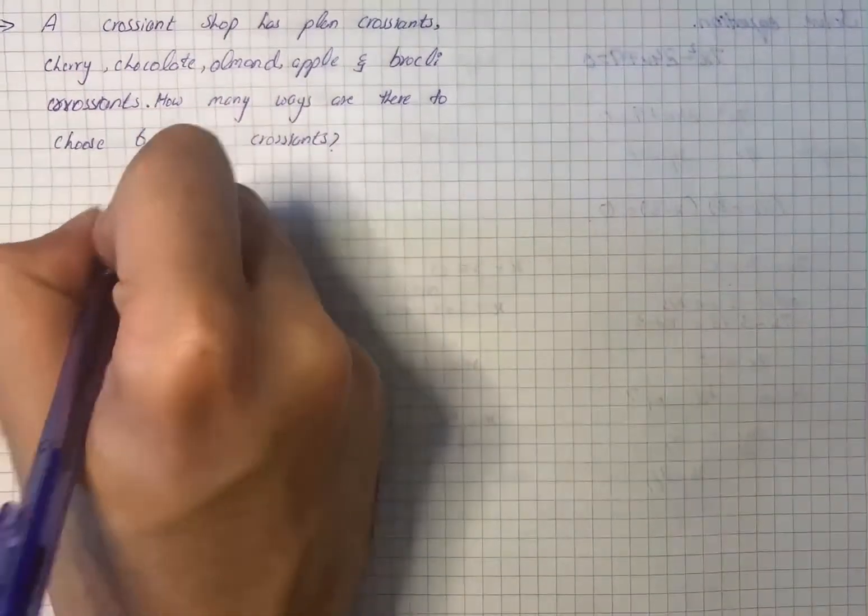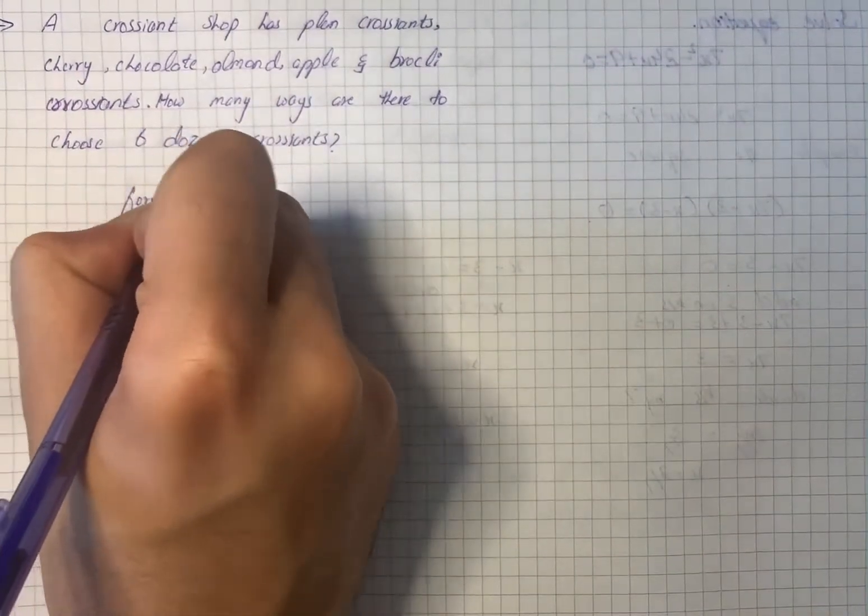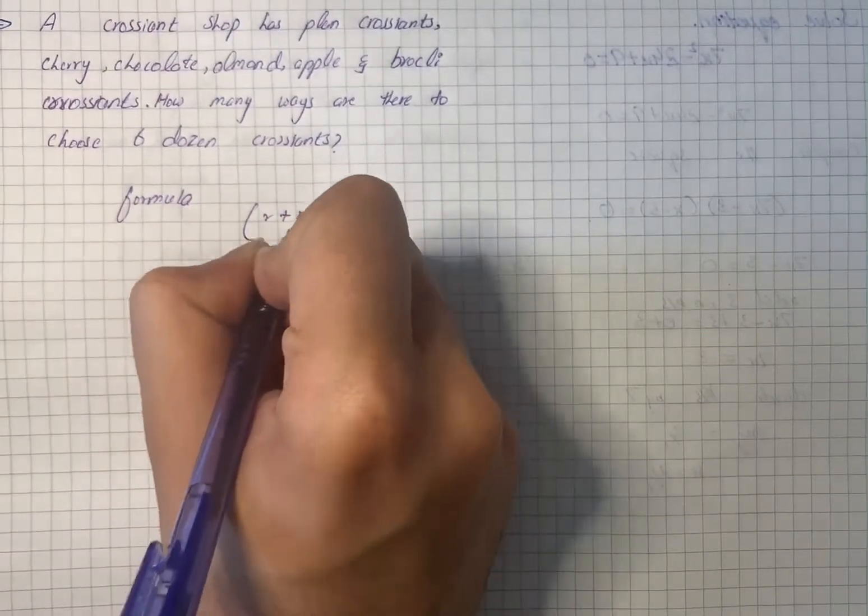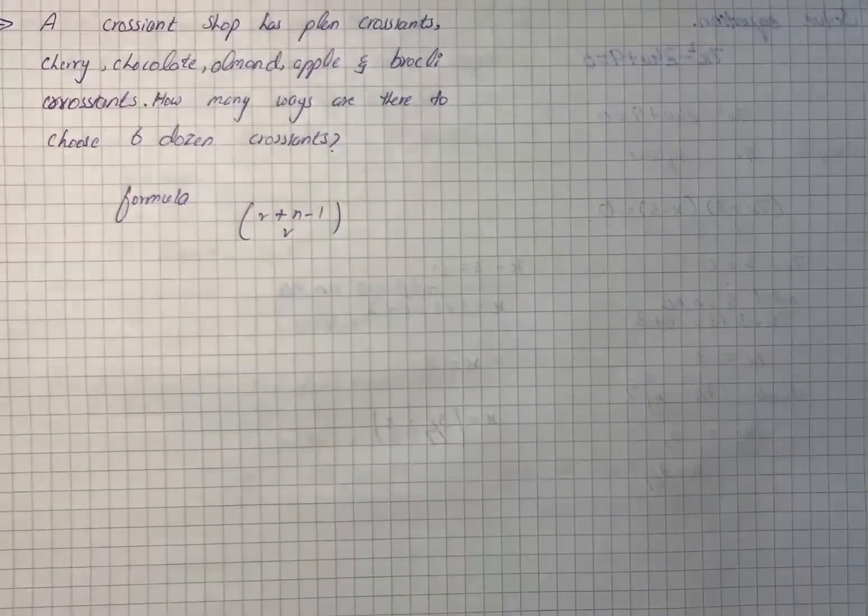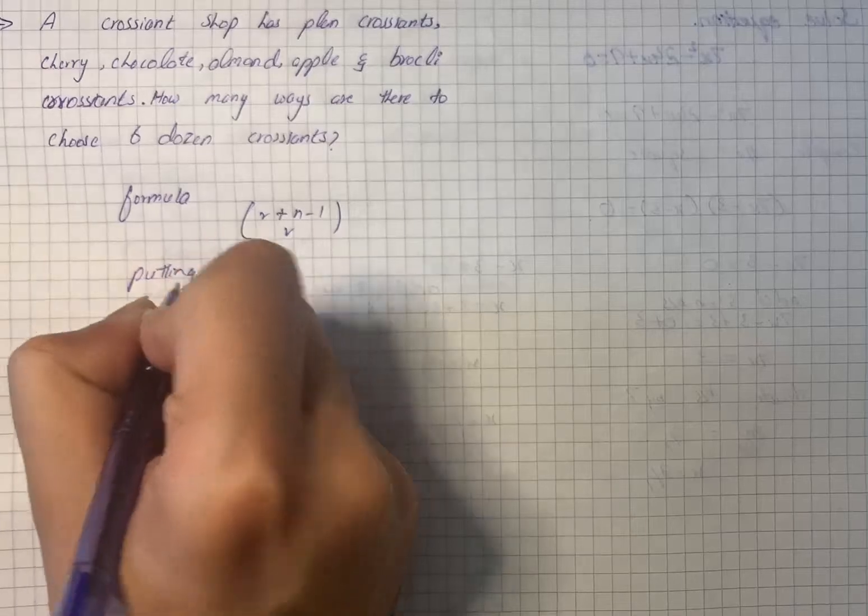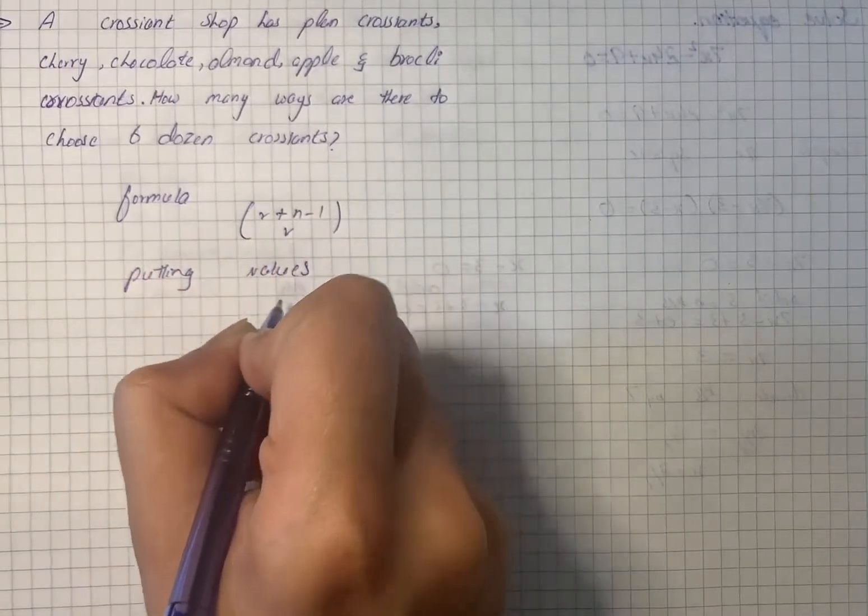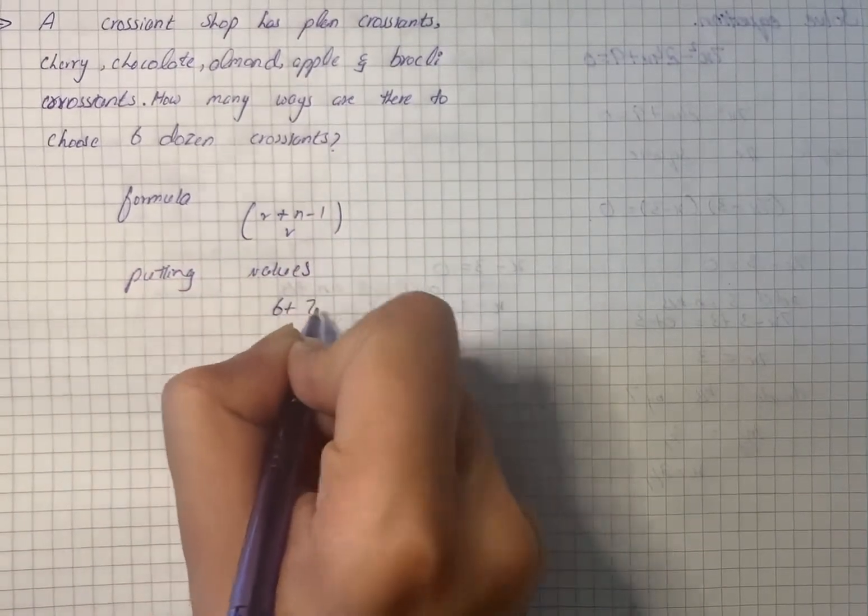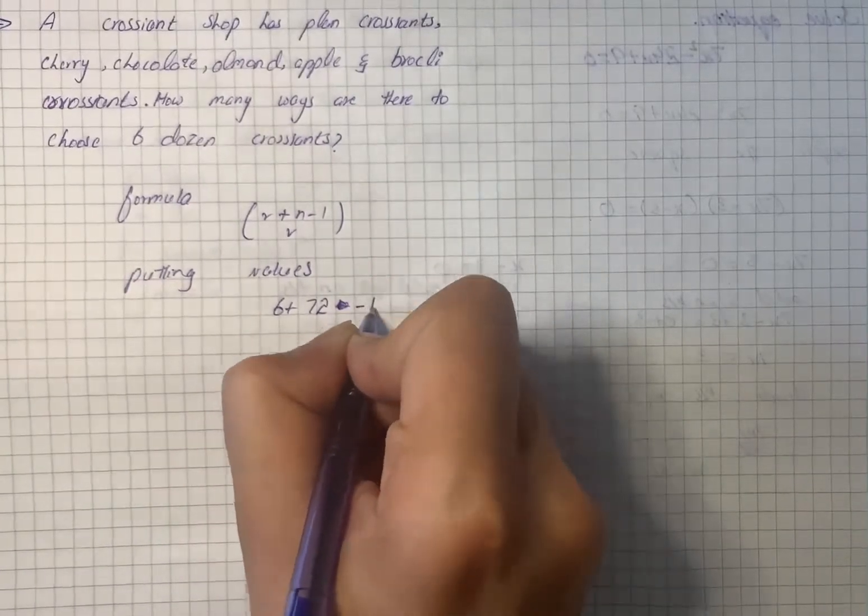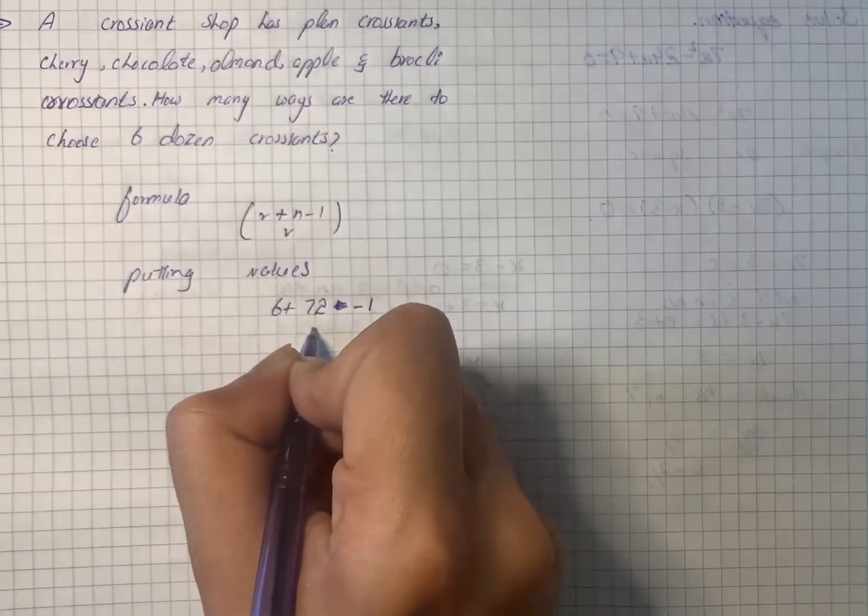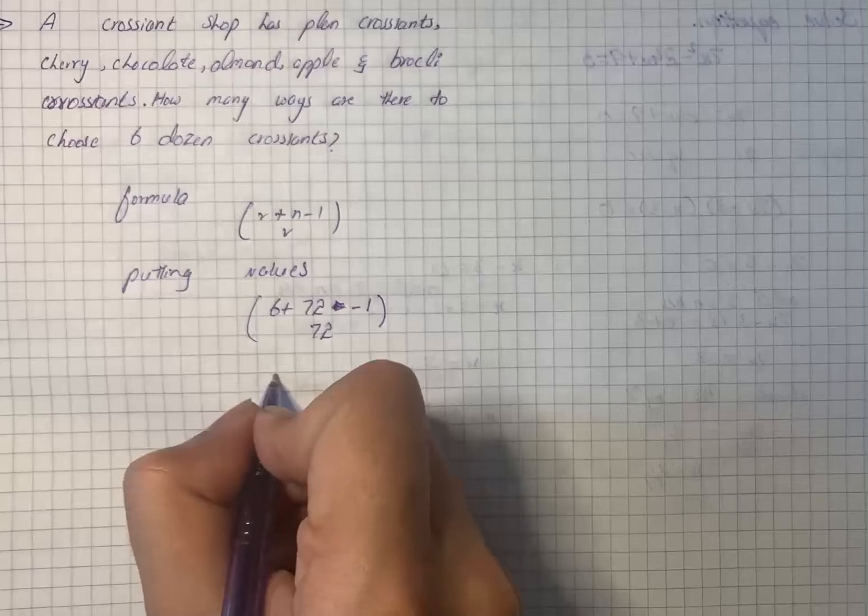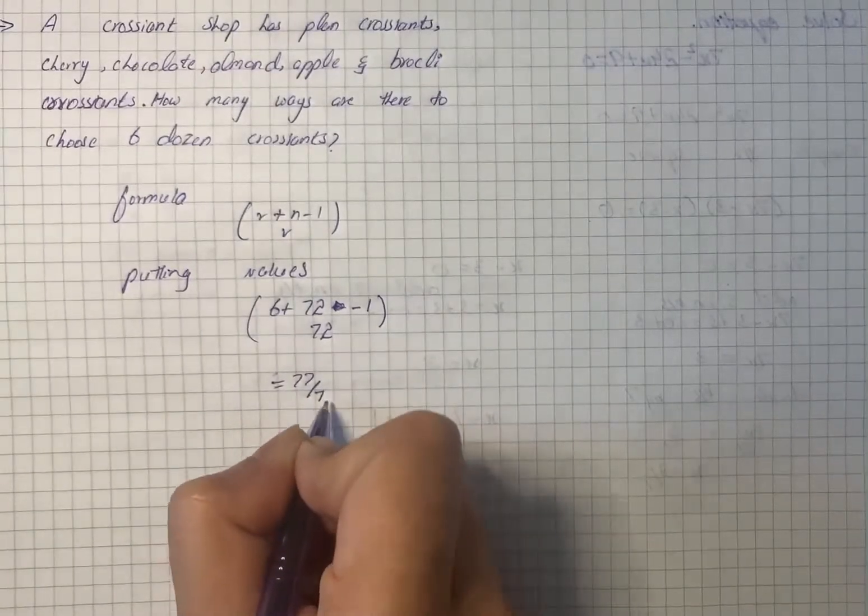So we have the formula r plus n minus 1 choose r. Putting values, we have 6 plus the number of croissants, that is 72 (six dozen), minus 1, choose 72. So it becomes 77 choose 72.